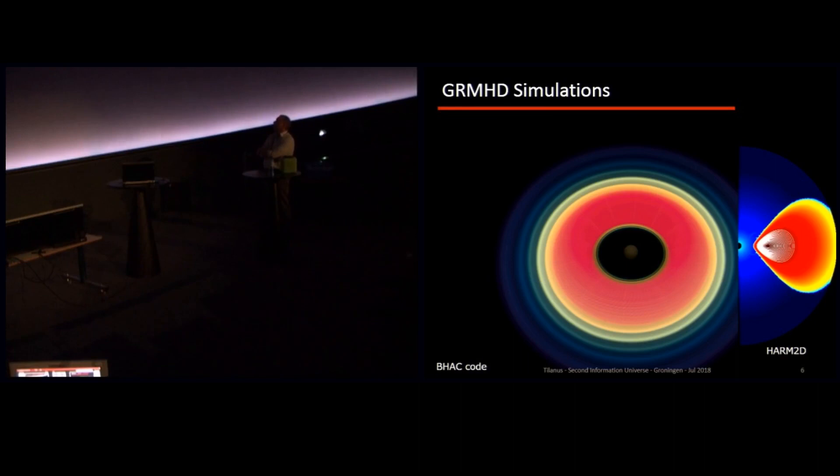So the plasma accretes, it becomes hot, it starts shining. The shadow will, the black hole event, the gravitational lensing will produce this shadow. And that's what we're trying to capture. But as the magnetic field lines in this simulation actually wind up, they become funnels, they create funnels. And these are the origins of the jets in these active galactic nuclei.